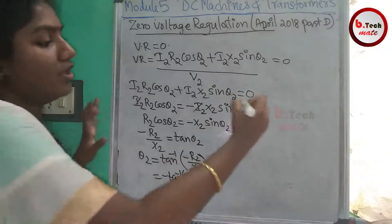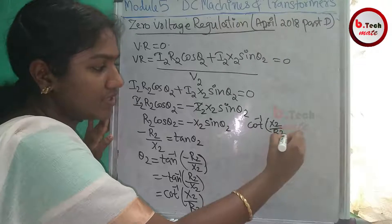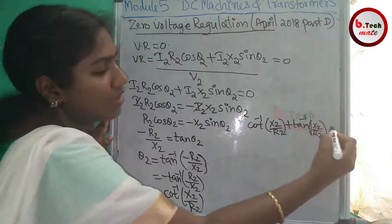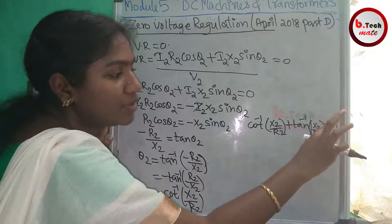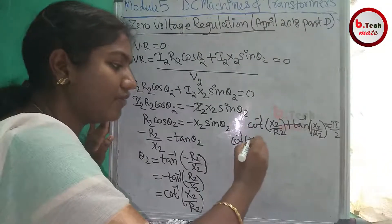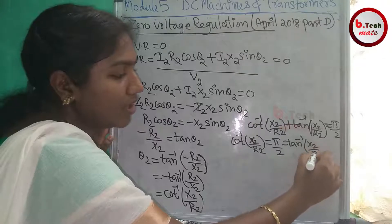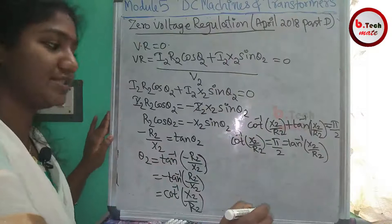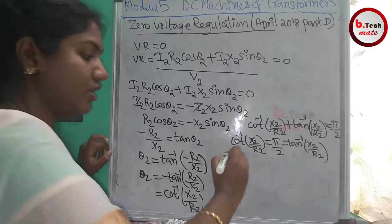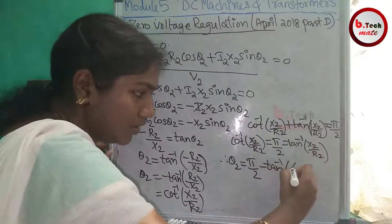Using the identity: cot⁻¹θ plus tan⁻¹θ equals 90 degrees, we get cot⁻¹(X₂/R₂) equals π/2 minus tan⁻¹(X₂/R₂). Therefore θ₂ equals π/2 minus tan⁻¹(X₂/R₂).